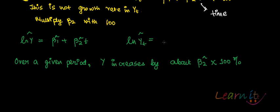Y hat t is equal to 2.17 plus 0.03 t. If you're getting like this then you won't say that Yt is increasing by 0.03 percent. It is increasing by 0.03 into 100 percent which is 3 percent for over a given period of time.